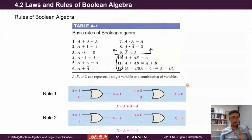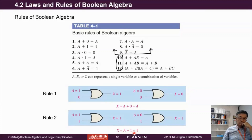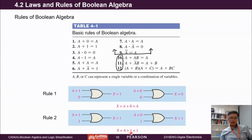Rule number two: A plus one equals one. This one seems very strange. Let's test the two possibilities. If A is one: one plus one equals one. If A is zero: zero plus one equals one. The output is always one regardless of the input variable. So whenever we see 'plus one,' the output is just one — it doesn't matter what the variable's condition is.